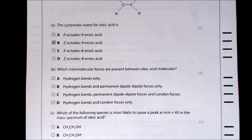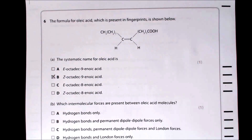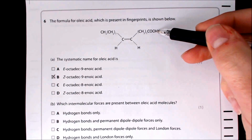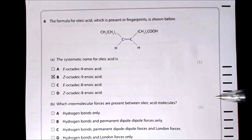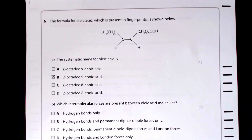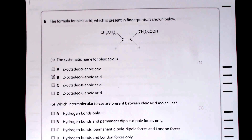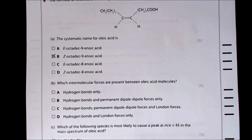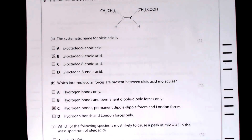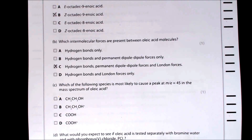Part B: which intermolecular forces are present between oleic acid molecules? Oleic acid has a carboxylic acid OH group, so hydrogen bonding is present. If hydrogen bonding is present, dipole-dipole interactions and London (dispersion) forces must also be present — you always have all three. The answer is C.